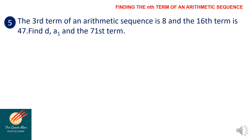The third term of an arithmetic sequence is 8 and the 16th term is 47. Find the common difference, the first term, and the 71st term. We start with a sub 3 equals 8. Using the formula a sub n equals a sub 1 plus (n minus 1) times d: